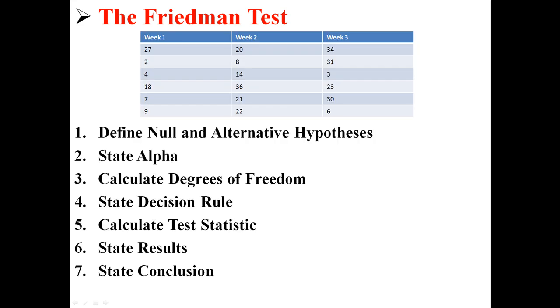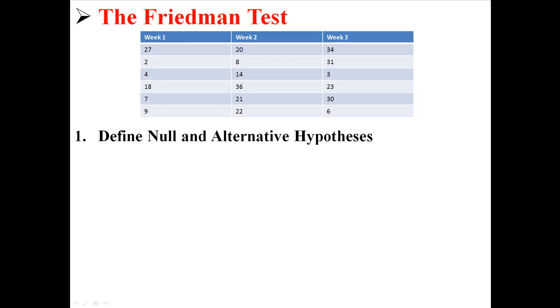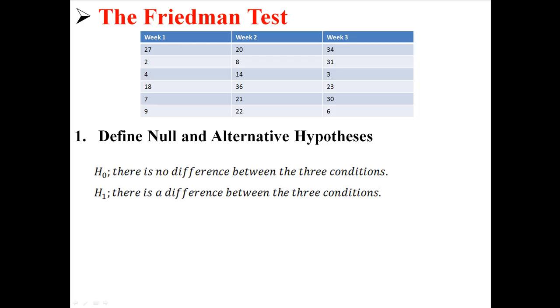So, let's do a hypothesis test for the Friedman test using the same 7 steps that we usually do. Step 1, which is to state our null and alternative hypotheses. So our null is that there is no difference between the 3 conditions, and our alternative is that there is a difference somewhere between the 3 conditions.